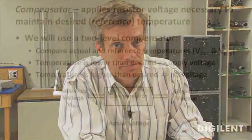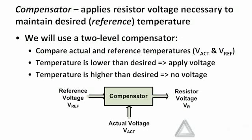Our final subsystem is the compensator, or sometimes called the controller. It's the compensator's job to decide how much input to apply to the plant in order to make the output be what you want it to be. In our particular case, our compensator will apply a voltage to the resistor to maintain the desired resistor temperature. The desired temperature is often called a reference value. We're going to use a two-level compensator — comparing actual and reference temperatures. This block has two inputs: a voltage indicating the desired temperature (V_ref) and the actual voltage (V_ACT). The temperature measurement system provides V_ACT; the only input you apply to the overall system is the reference voltage, which tells the system how hot you want the resistor to be.